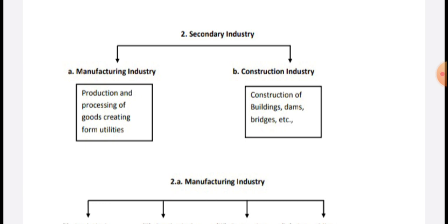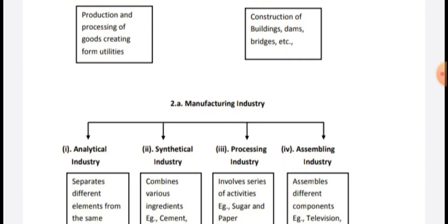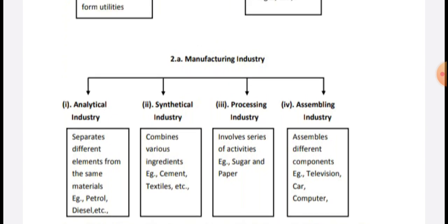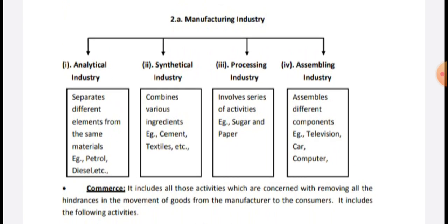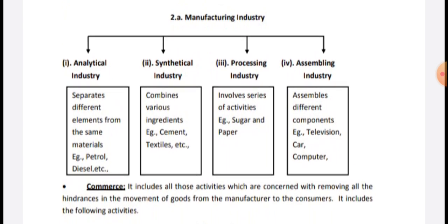Secondary industry includes manufacturing industry and construction industry. Construction industry involves construction of buildings. Manufacturing industry is of four types: analytic industry, synthetic industry, processing industry, and assembly industry. Analytic industry separates different elements from the same material — for example, petrol, diesel, etc. Synthetic industry combines various ingredients, such as in textiles. Processing industry involves a series of processes, like sugar and paper manufacturing.